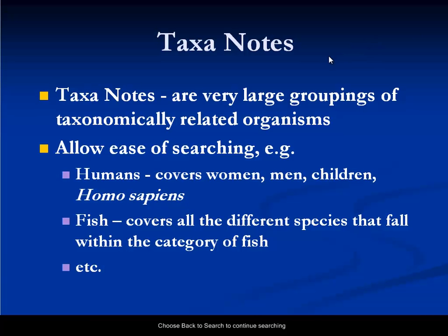Next I'm going to look at taxonotes. The taxonotes index is for very large groupings of taxonomically related organisms and these have been created to allow ease of searching. For example, if you were interested in research involving humans — covering women, men, children, Homo sapiens — you could use the one term 'humans' in taxonotes. Another taxonote is 'fish', which would cover all the different species that fall within the category of fish.